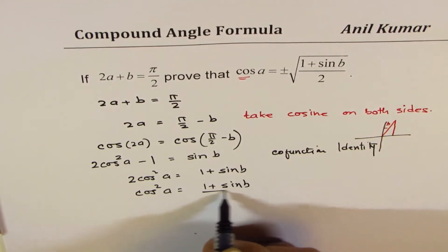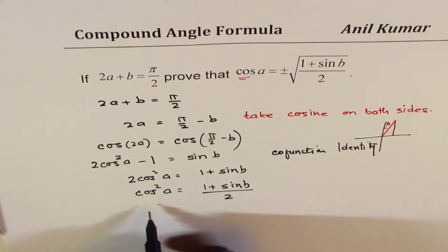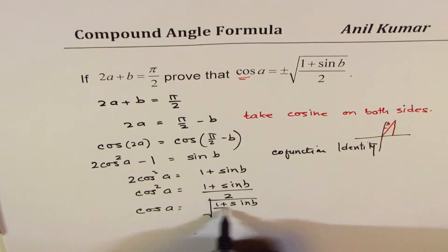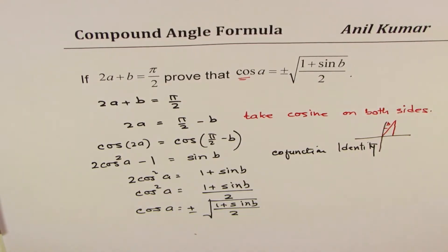And what is cos a? Cos a will be square root of 1 plus sin b divided by 2. Whenever you do square root, you have to do plus and minus.